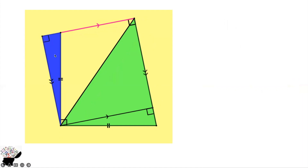When we extend it, we get a small blue triangle. This angle is 90° and the length of this side is the same as the length of this side. This small triangle has a 90° angle, which shows us that they are congruent triangles.